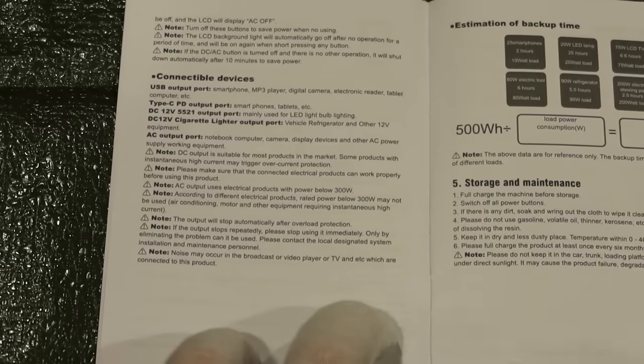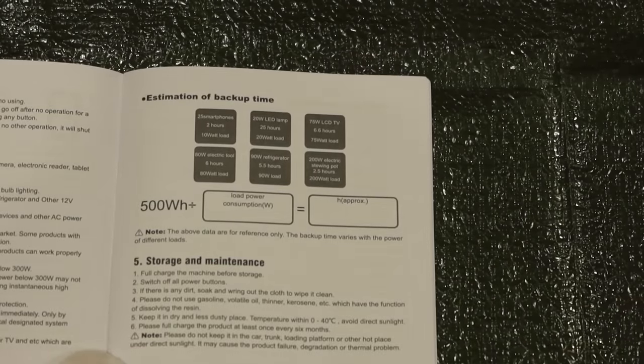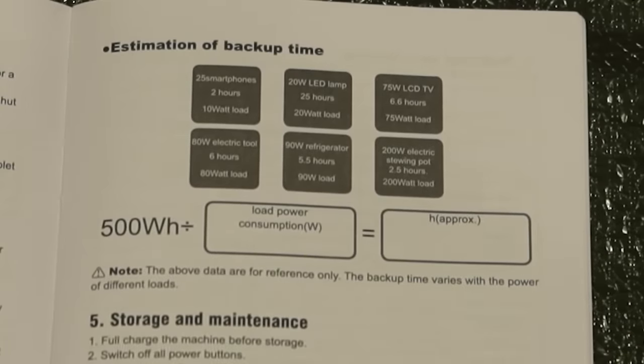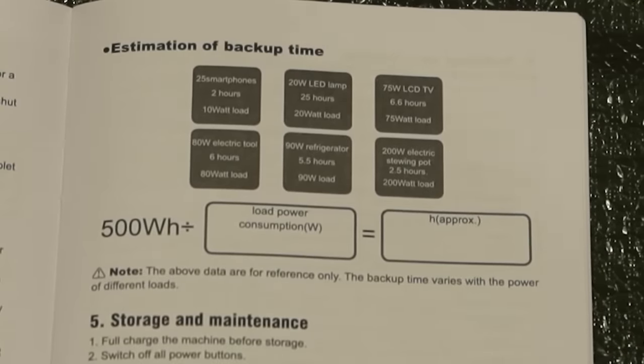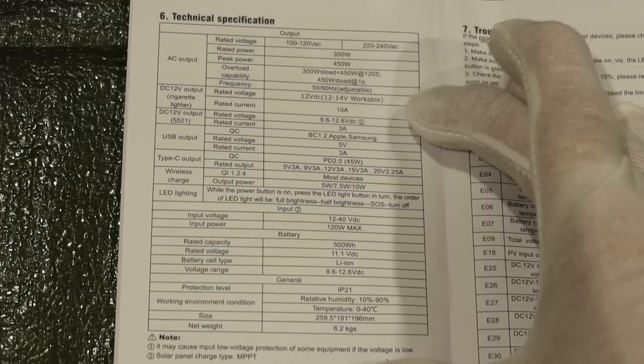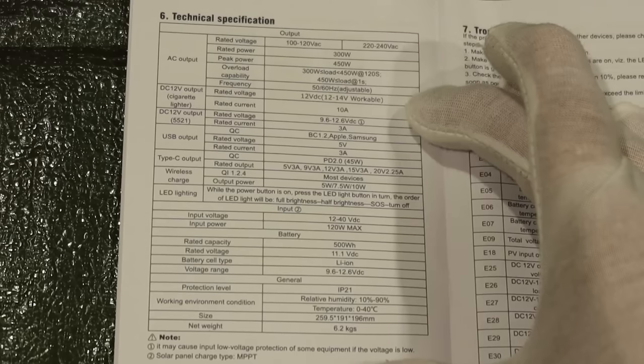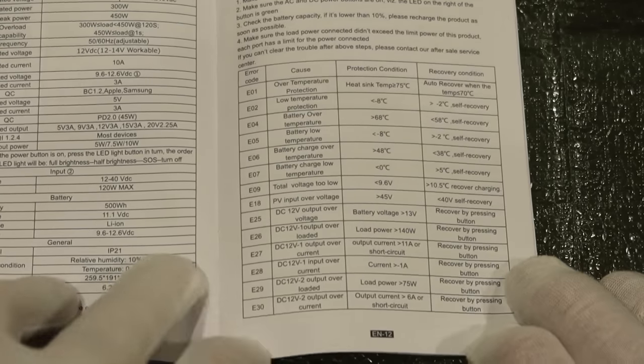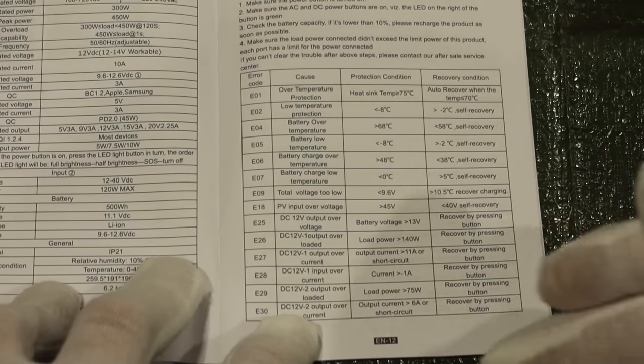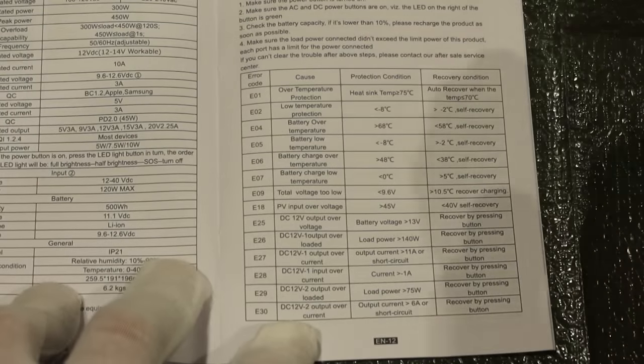And of course they give you the manual and warranty. Those of you who always ask how many hours can you run whatever, here are some examples and they give you a nice little formula. And here is the specifications page. And the book also includes troubleshooting codes. So if you overvolt, undervolt or whatever, it comes up with a special code on the display.